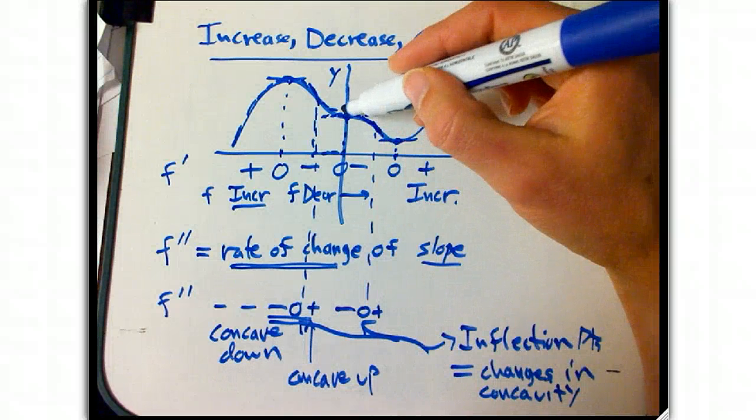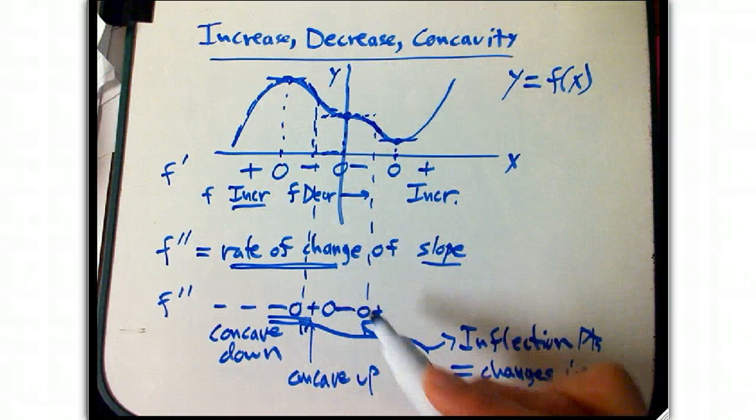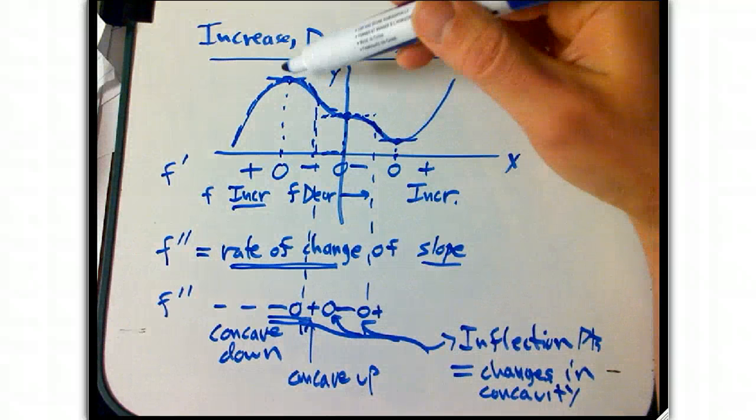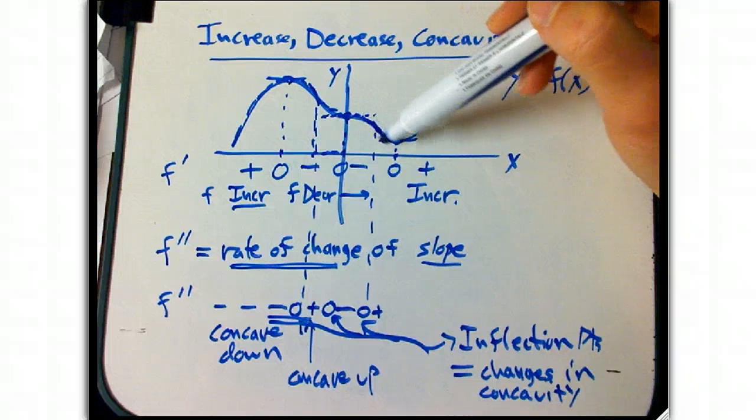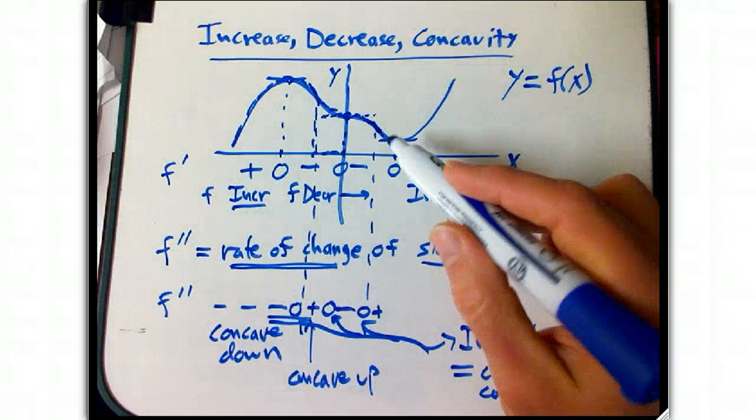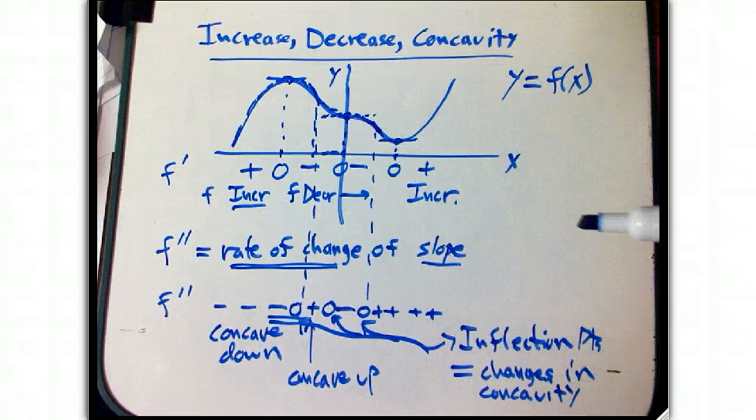One thing I didn't put in here is what happens right here? That was plus to minus as well. I forgot to put the zero in here. So this is also an inflection point. A bunch of inflection points going on right in here. Curving downward, curving upward, curving downward, curving upward. And then finally, looks like it's curving upward for the rest of it.